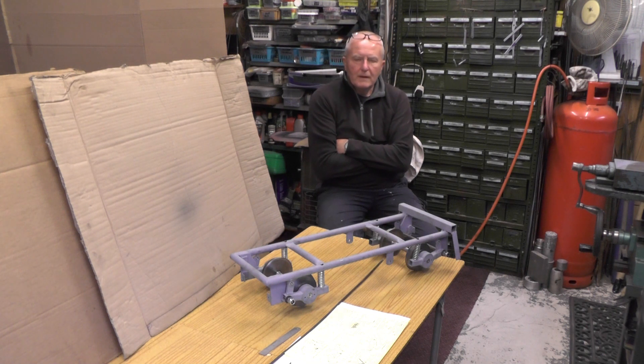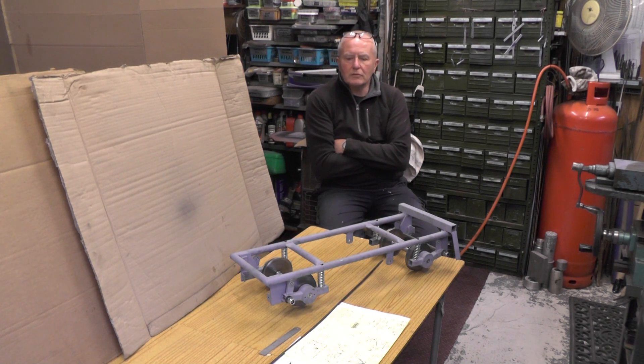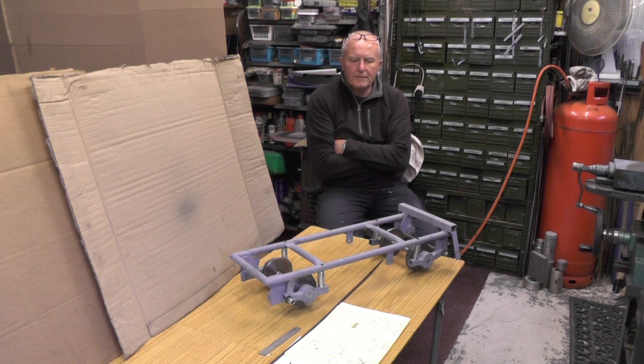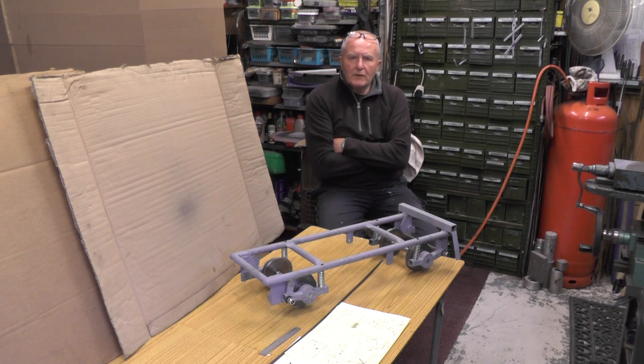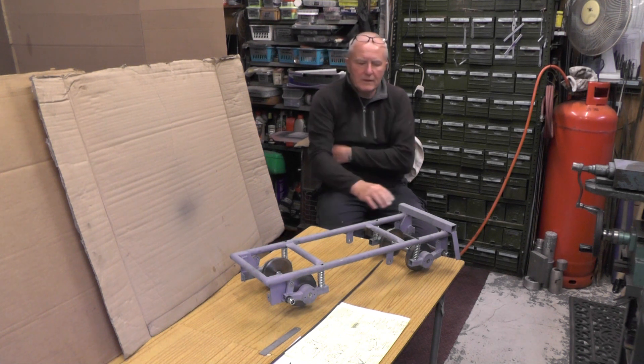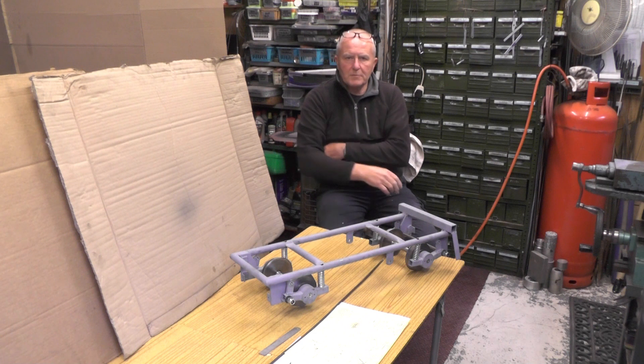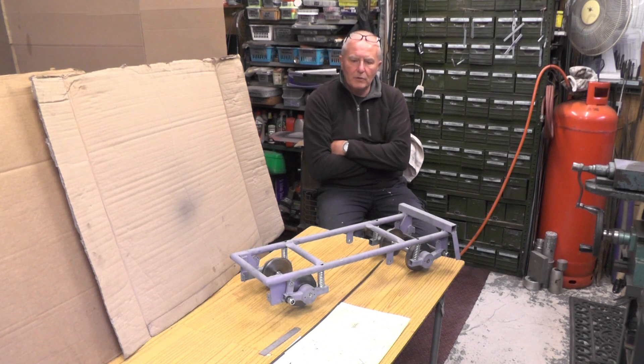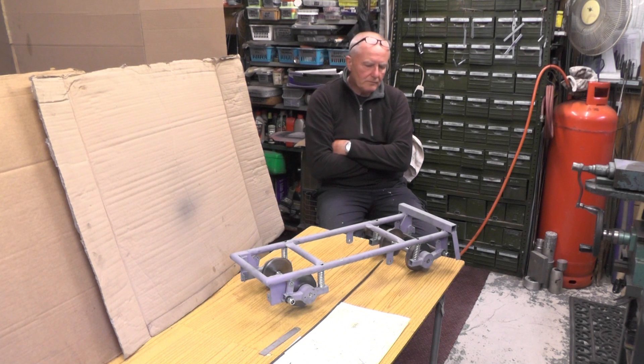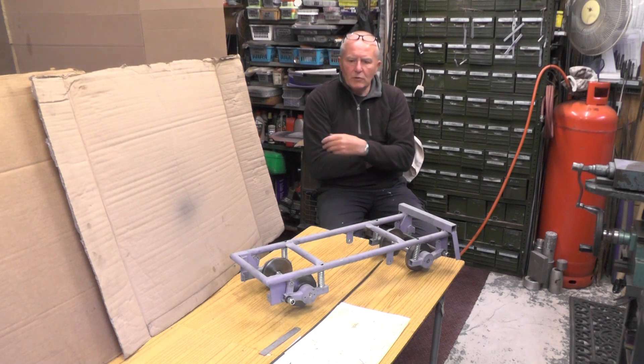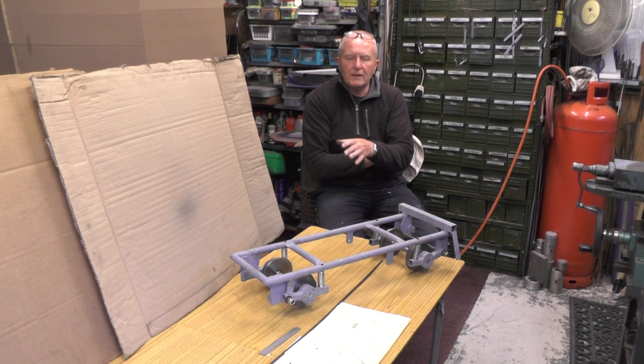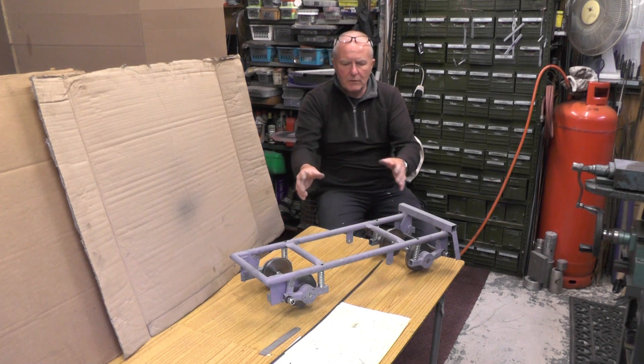Hey everybody, I'm on part five of my riding car, riding truck, riding trolley, whatever you want to call it. If you've not seen parts one, two, three, and four, take a look back at them and you can see where I made the frame, the suspension, and in the last part I made all the braking components. In this part then, I'm going to assemble all those braking components and show you exactly where they fit on the riding car and how they work.